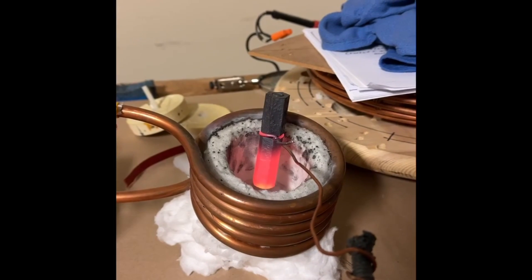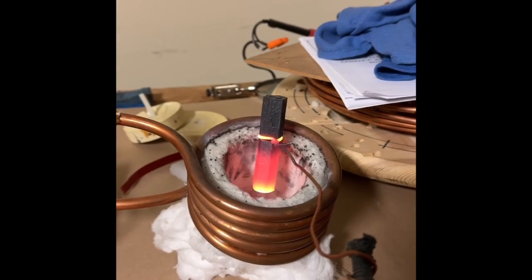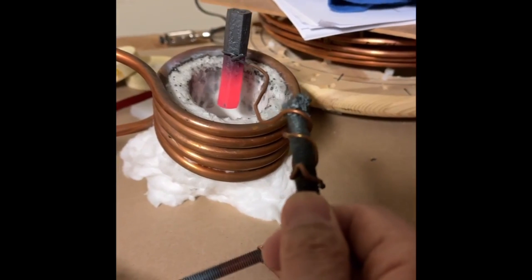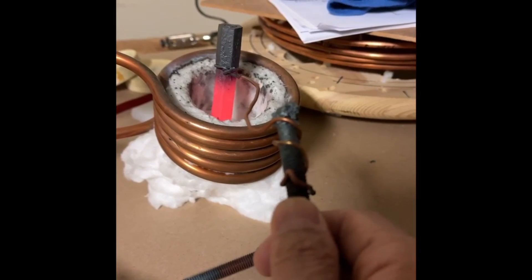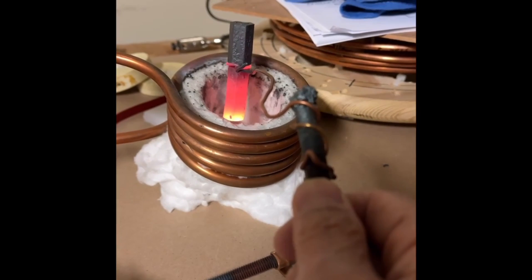It's already reached the curie point. One of the things that's great about this is it can be used for forging, so you can take large pieces of ferrous metal such as this and then use it for forging.